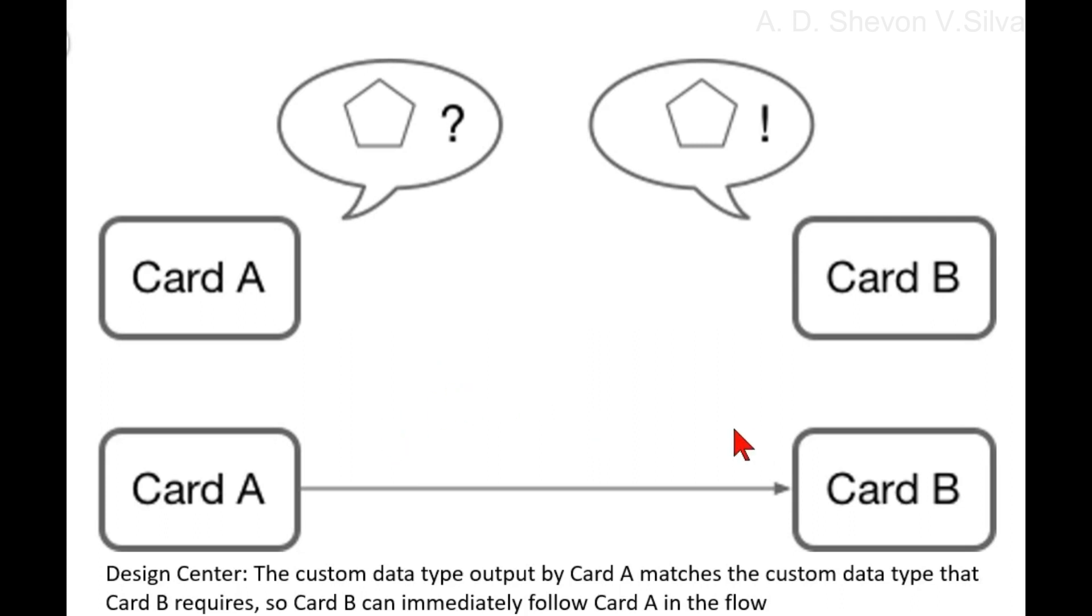If the output of the previous card uses a different custom data type, you must map the element of the previous card's custom data type to the element of the custom data type of the next card request.